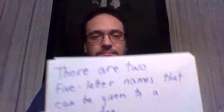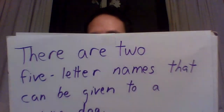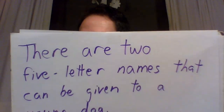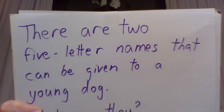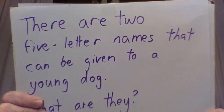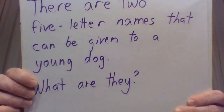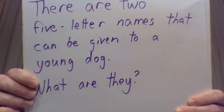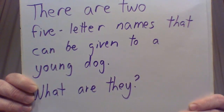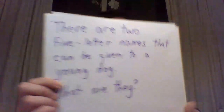Number three — there's another two-part answer, like the last one. There are two five-letter names that can be given to a young dog. What are they?